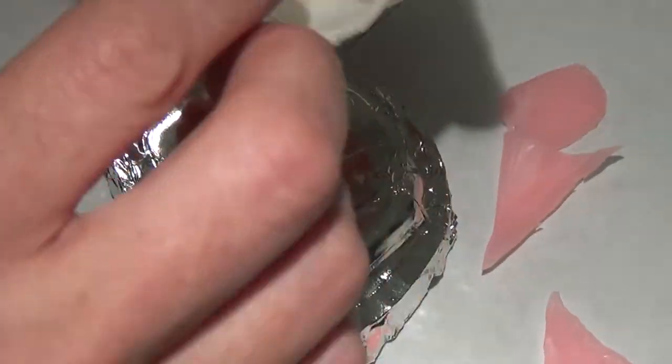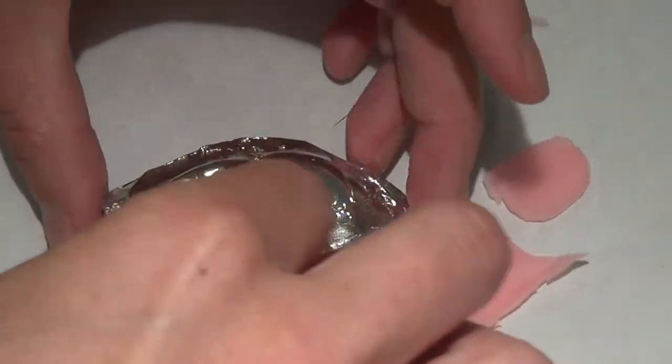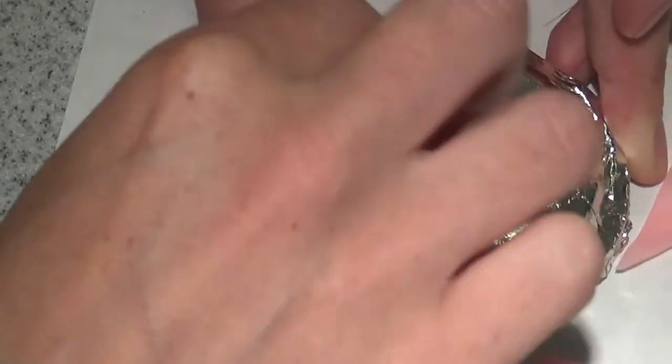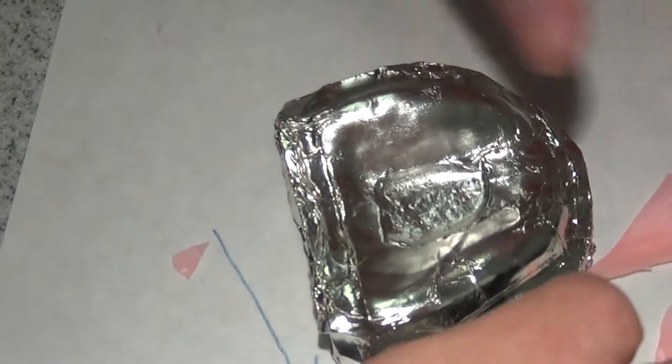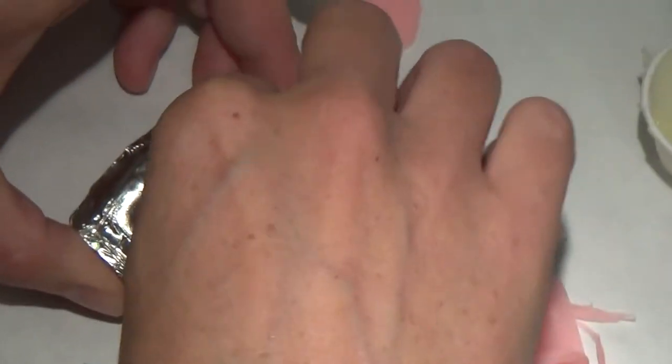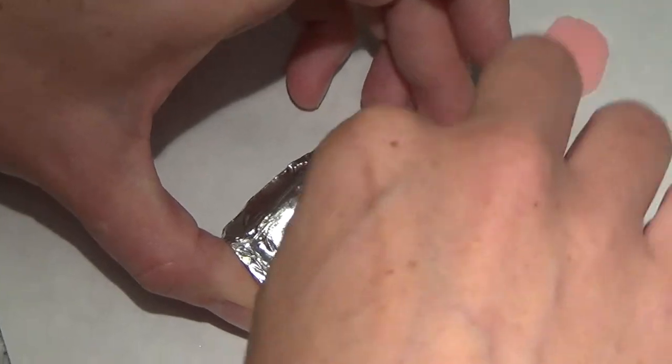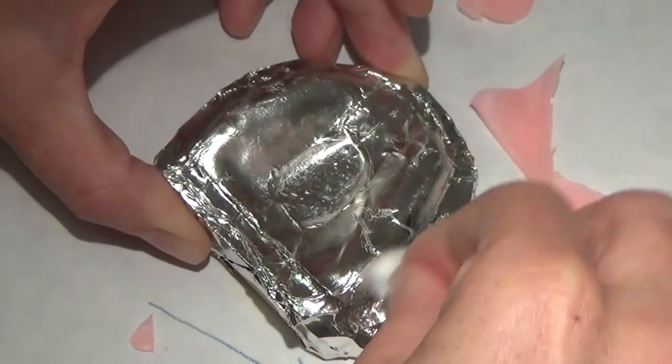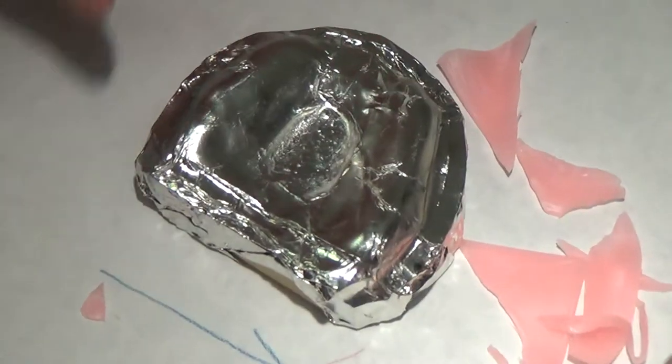I'm going to do some Vaseline. Just a thin layer. You don't need a lot. You want to be a little bit generous because if you do this step, you don't have to add Vaseline to the intaglio of it before you cure the inside. If you've got good Vaseline here.